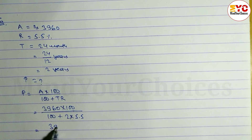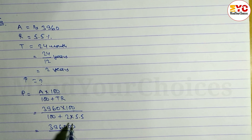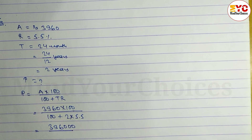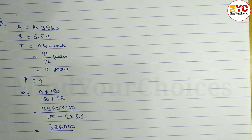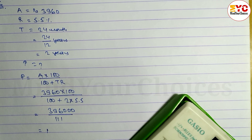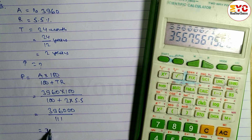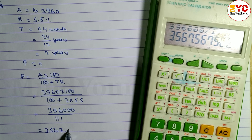So: 3960 × 100 divided by (100 + 2 × 5.5). That is 3960 × 100 divided by 111. Let's calculate — 5.5 × 2 = 11, 100 + 11 = 111. Dividing: 3960 × 100 / 111 = 3567.57. This is the principal.